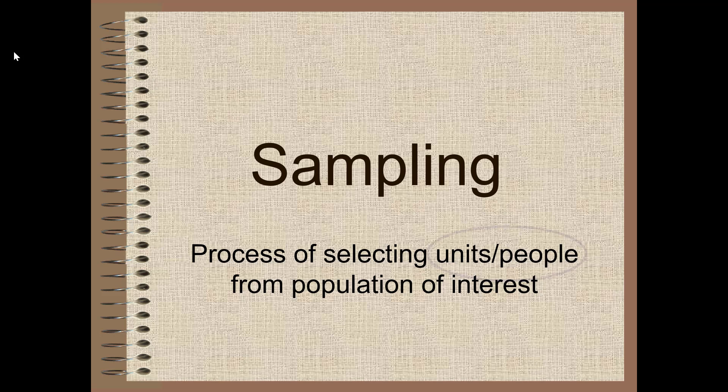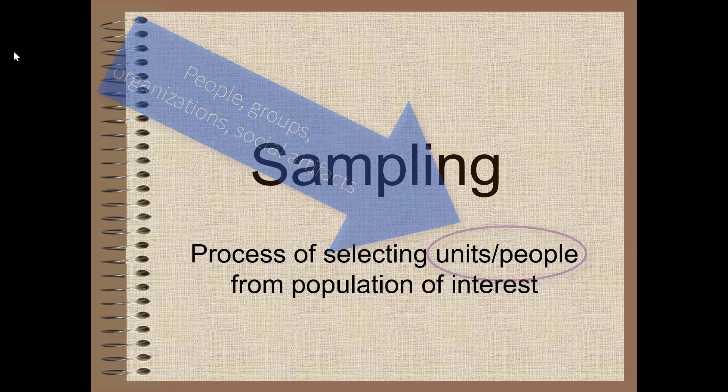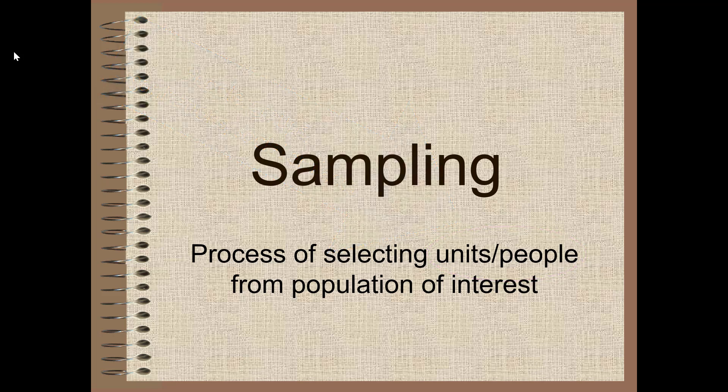Notice I say units or people because if you recall back to the units of analysis video, we talked about how units can be people, groups, communities, cities, or organizations like social movements. So the sampling methods I'm going to go over can involve not just people but other units of analysis as well.